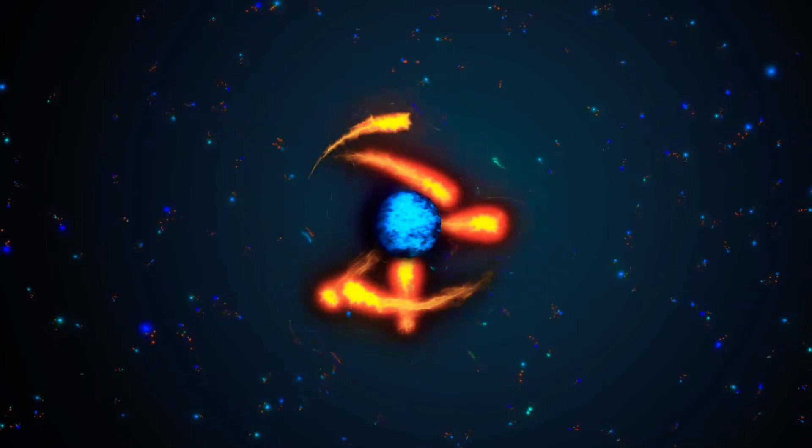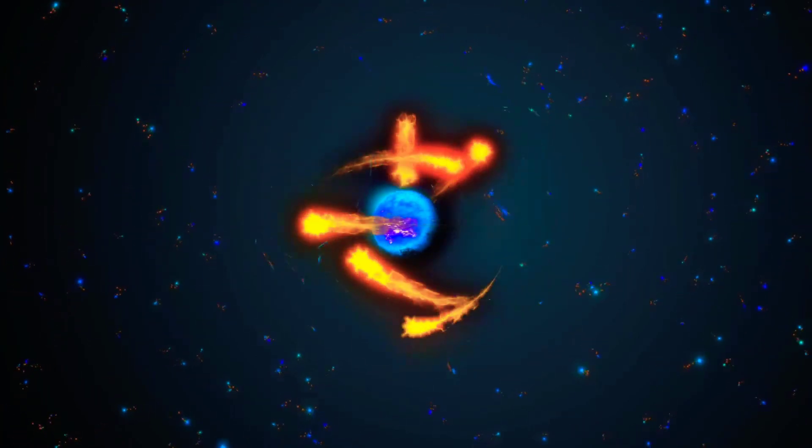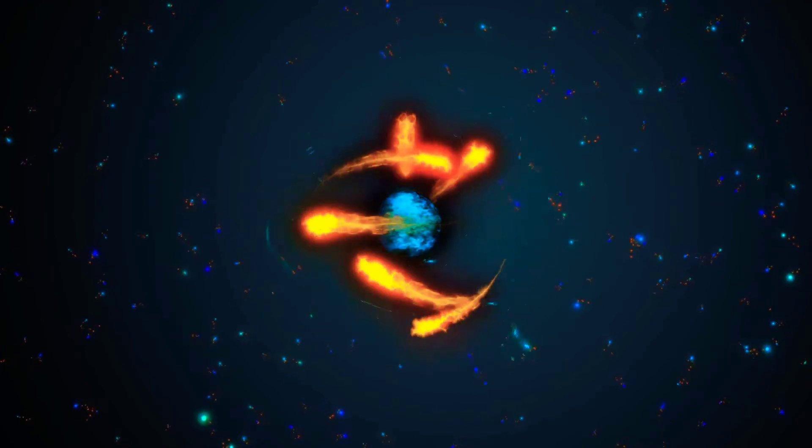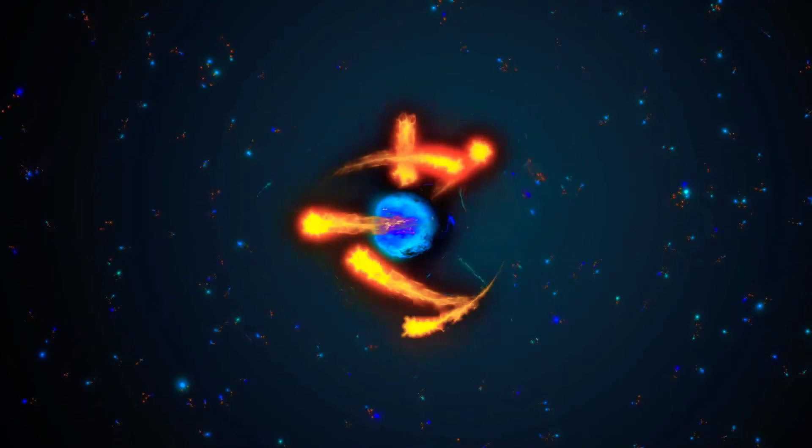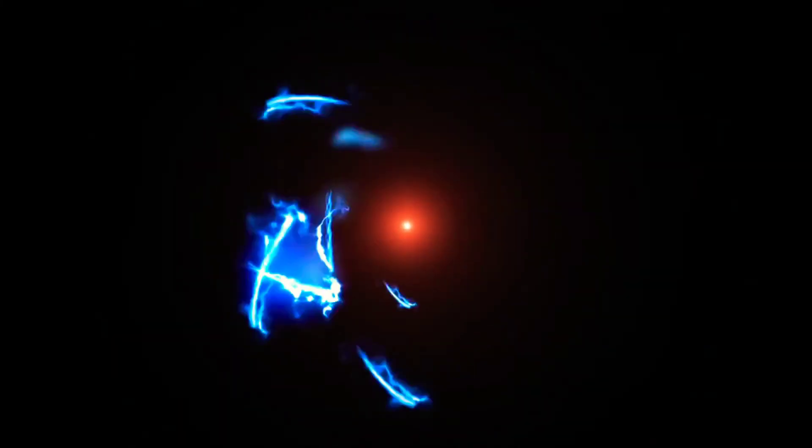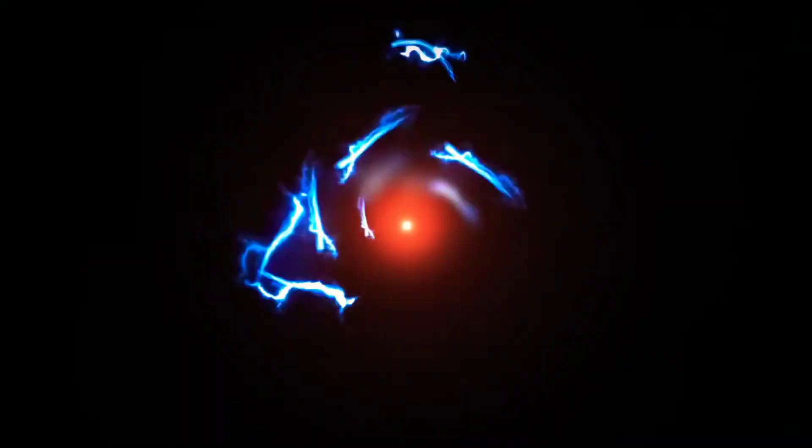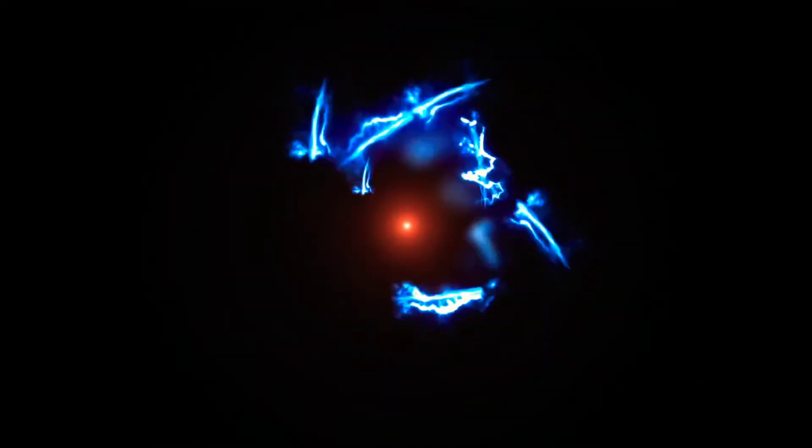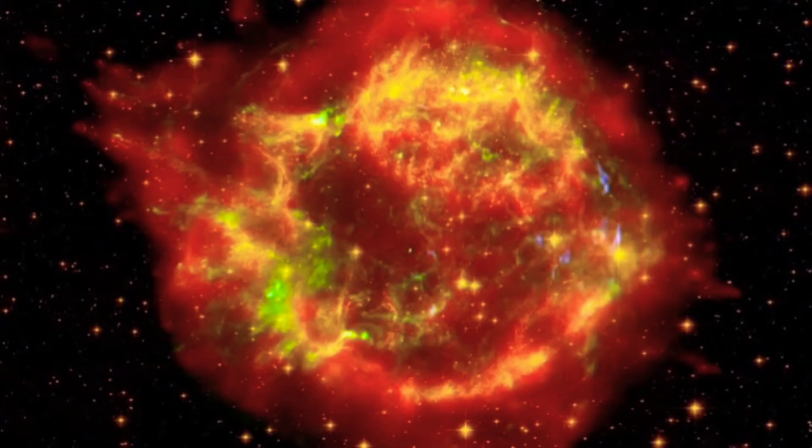Stars are fusion engines, creating heavier elements inside their cauldrons, but Przybylski's star is cooking up the kinds of elements we don't normally see in stars, including uranium. This star seems to form only heavier elements, the kind of stuff seen in violent events like supernova.